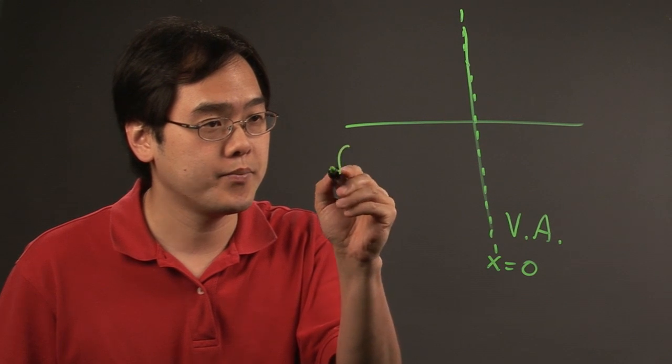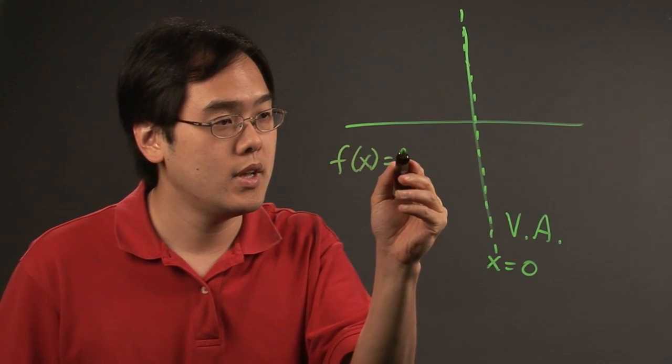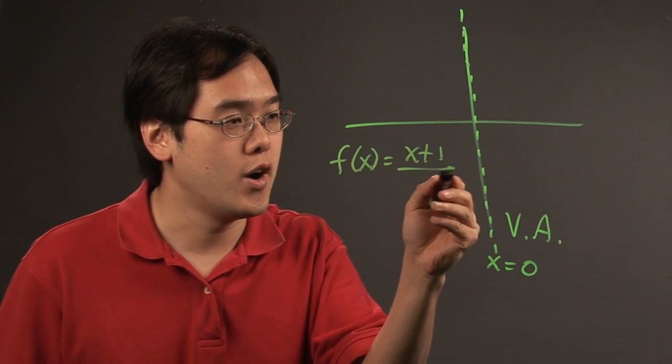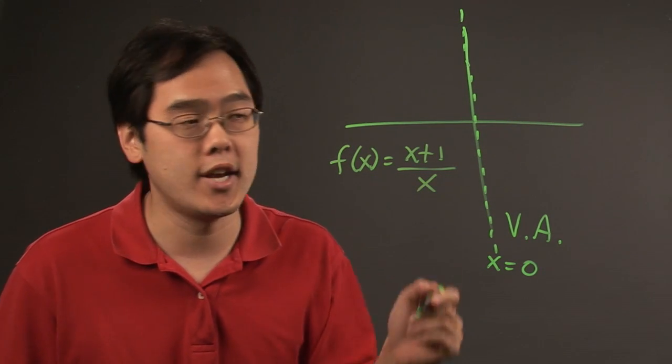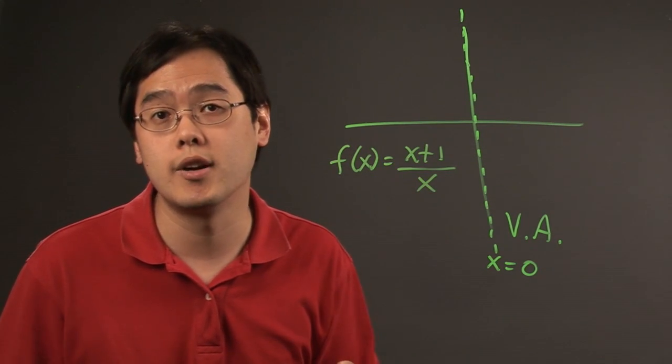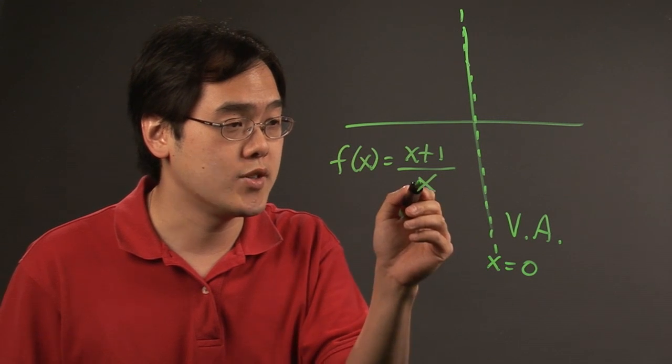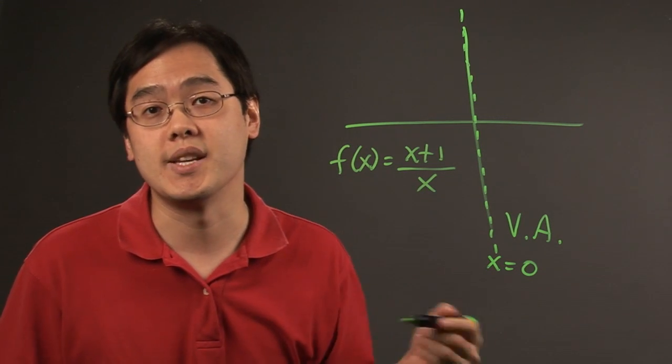So for example, if you have a function x plus 1 over x, if you plug in zero that's going to give you undefined in the denominator. Notice it doesn't give you zero in the numerator, but you're looking for values which give zero in the denominator only.